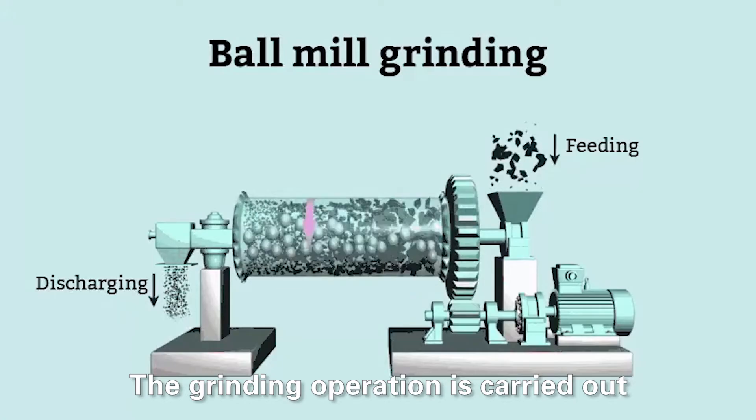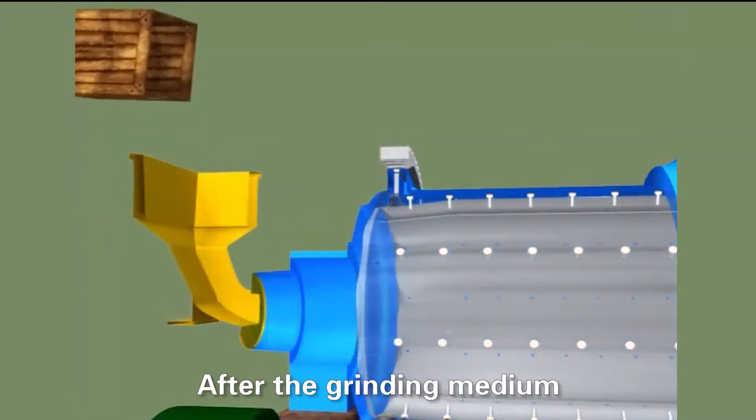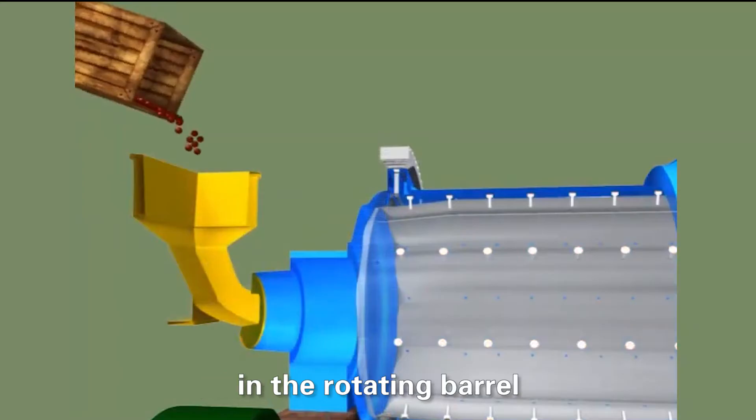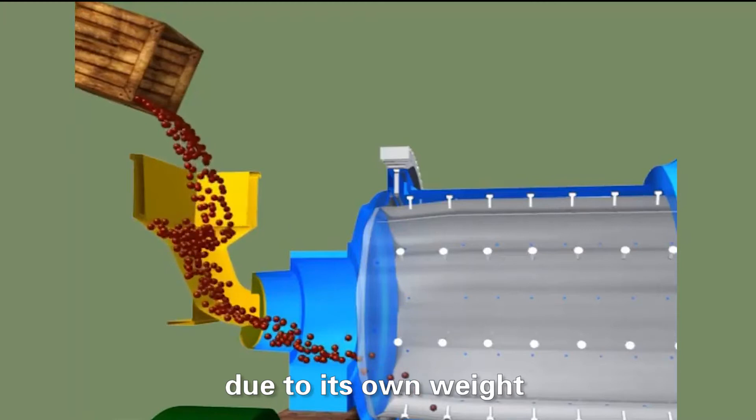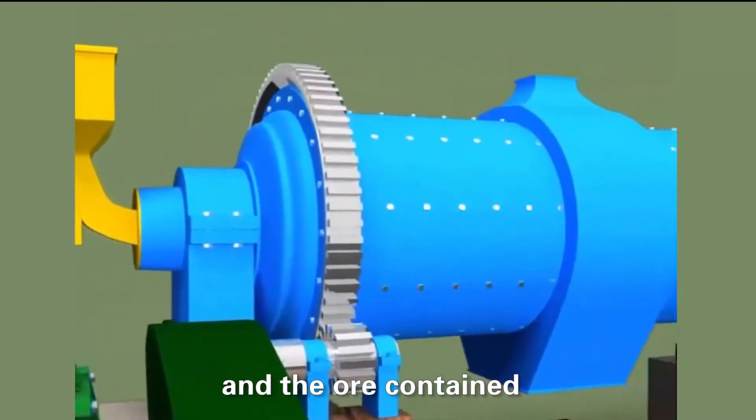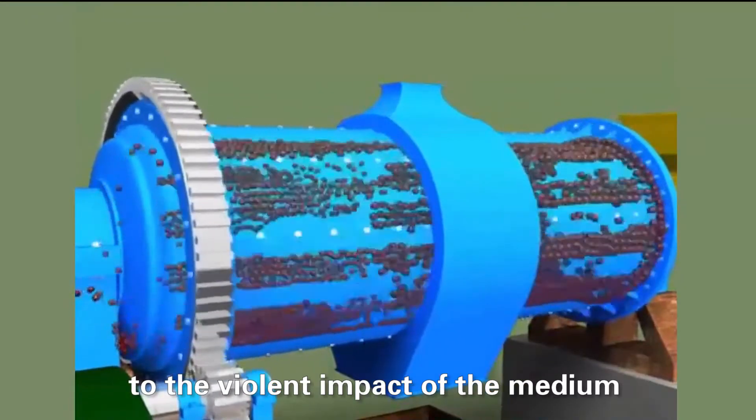The grinding operation is carried out in the barrel of the ball mill. After the grinding medium in the rotating barrel is brought to a certain height, the medium will fall due to its own weight, and the ore contained in the barrel will be subject to the violent impact of the medium.